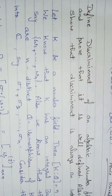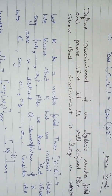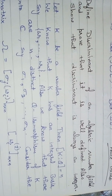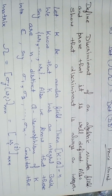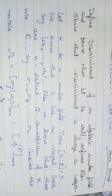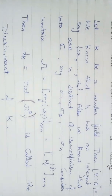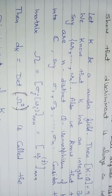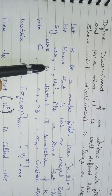In this video lecture we will define the discriminant of an algebraic number field and we will prove that it is well defined. We will also show that the discriminant is always an integer. For any number field, we know that there always exists an integral basis, so let w1 to wn be an integral basis for K.